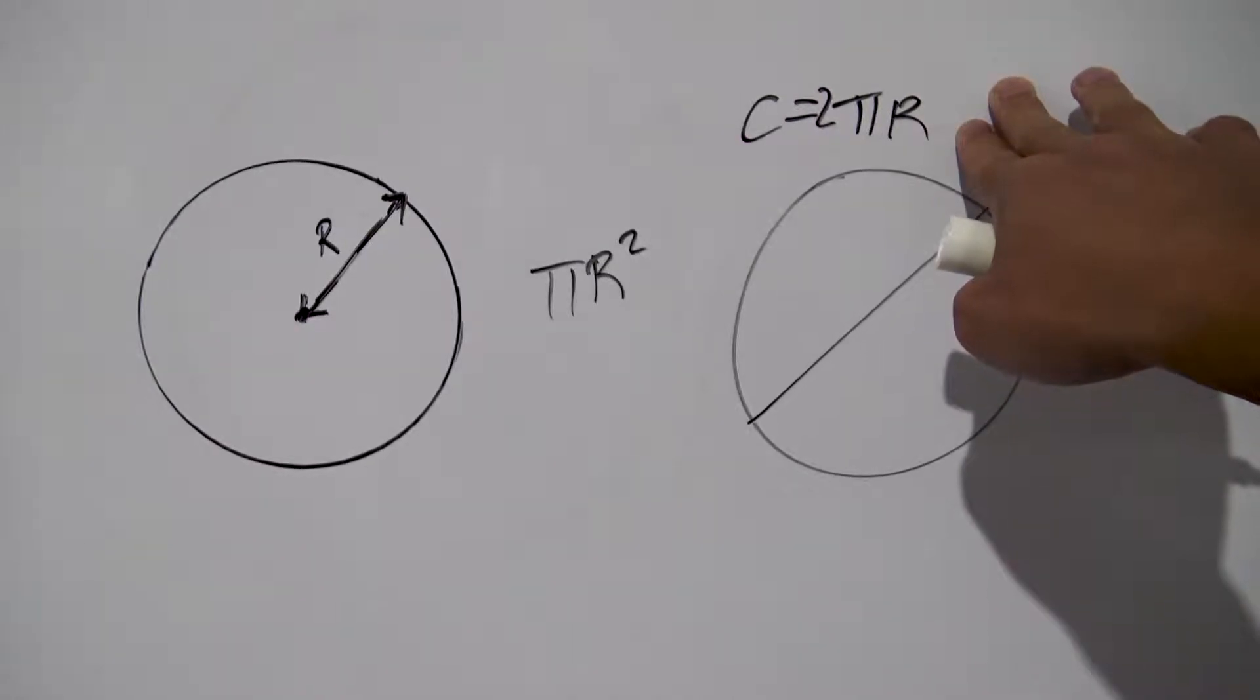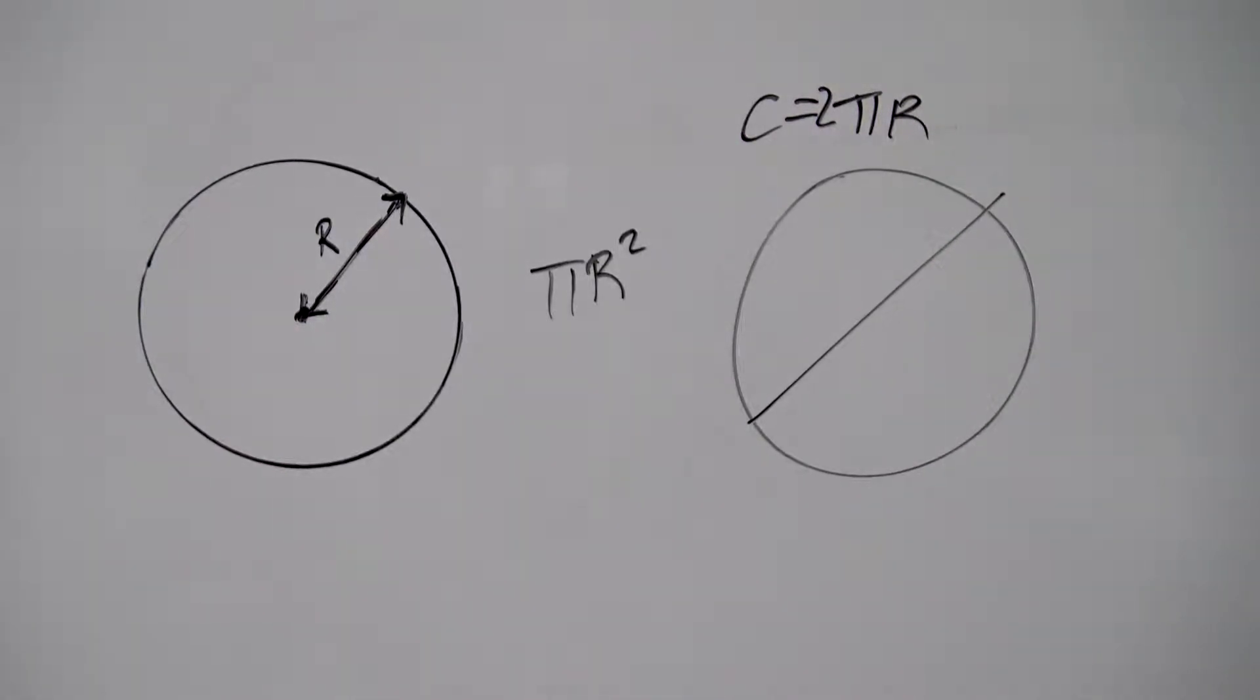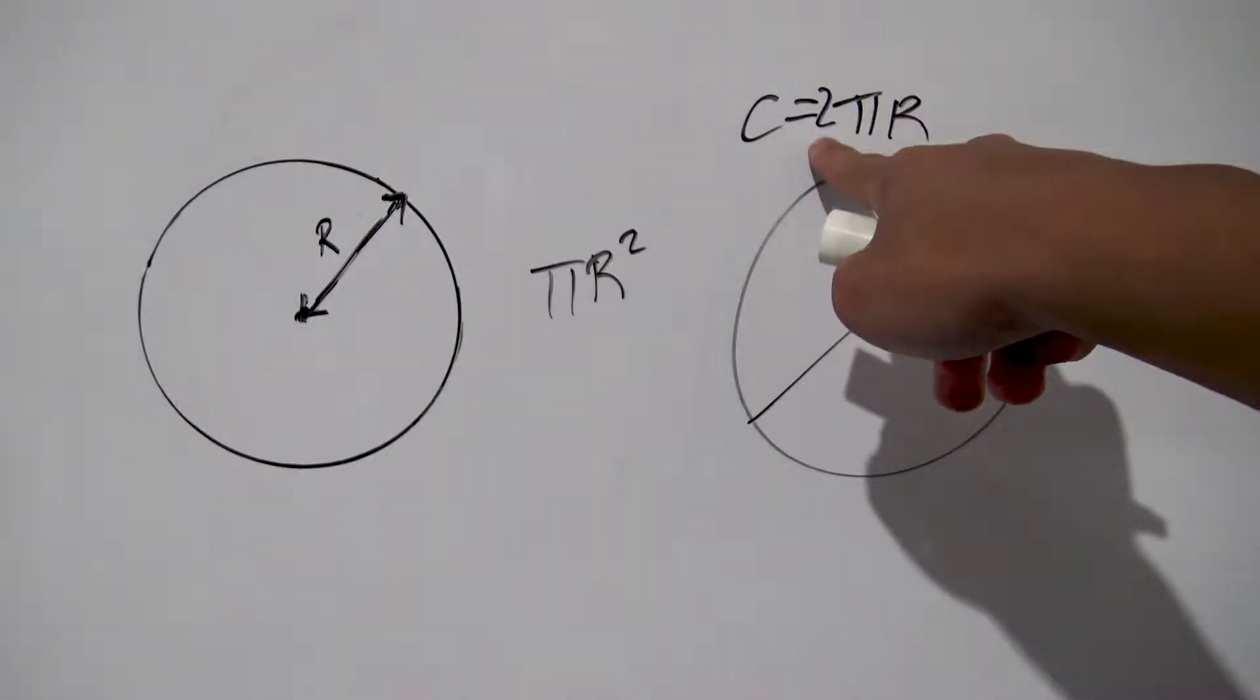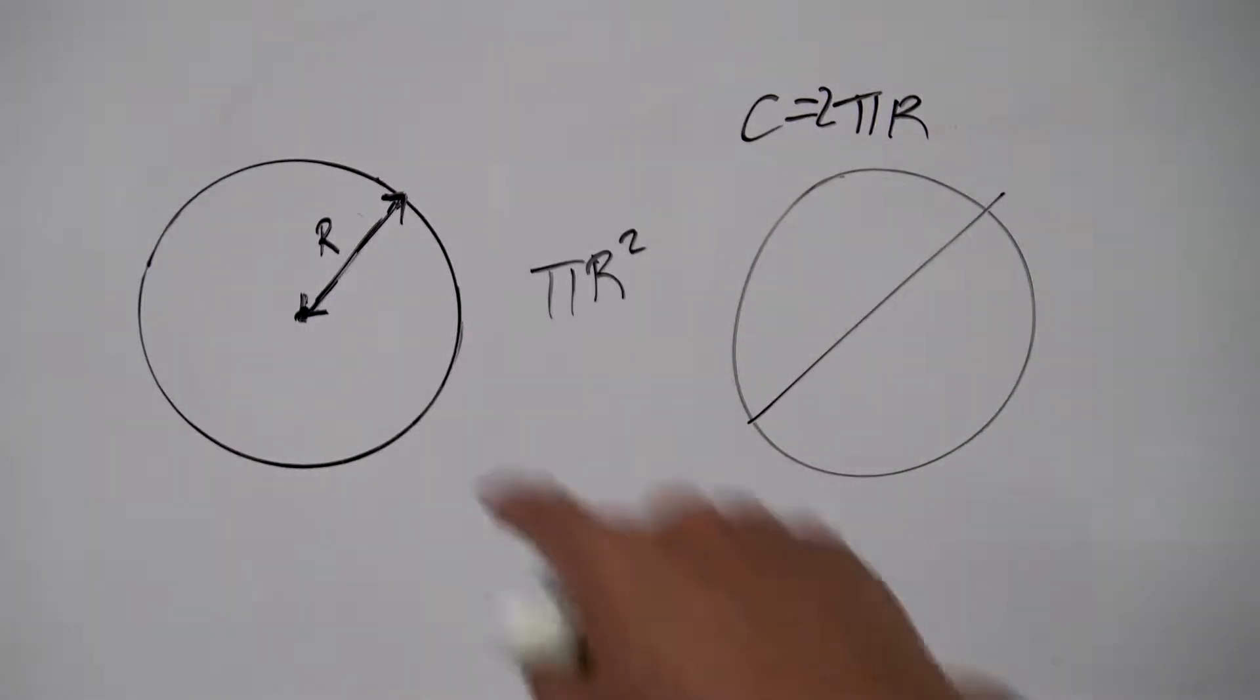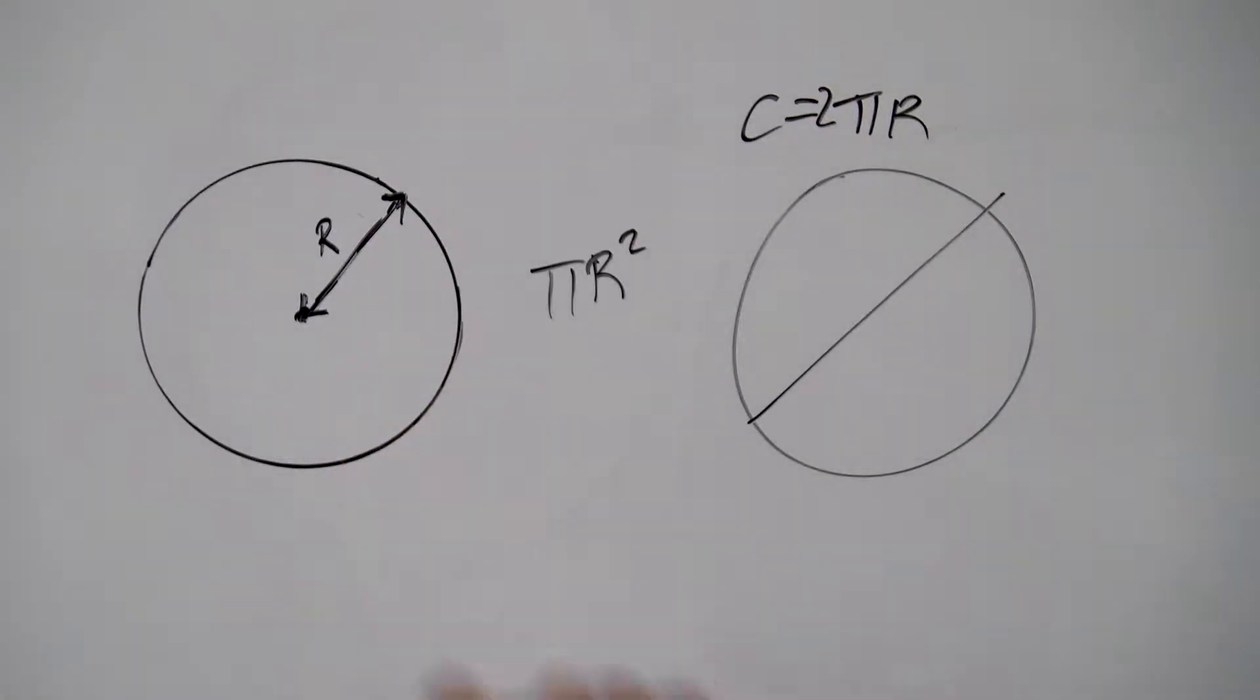So now we have the formula for the circumference of our circle which we are all familiar with. So now we're going to use this fact here to prove that the area of a circle is exactly pi times r squared. So at the moment we can't really do anything with this circle right here.